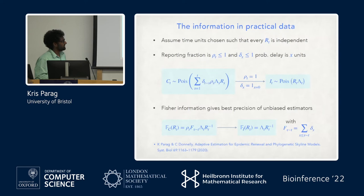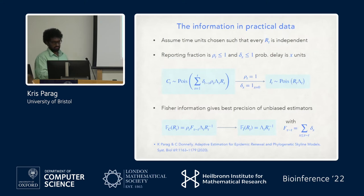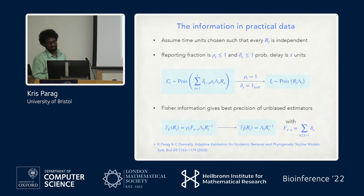This gives a generalized renewal model for cases. The key takeaway is that if you set delays to zero and reporting fractions to one, you get back the perfect model. We can compute the Fisher information under this approach and get a simple expression where F is the cumulative delay on an infection to being reported.